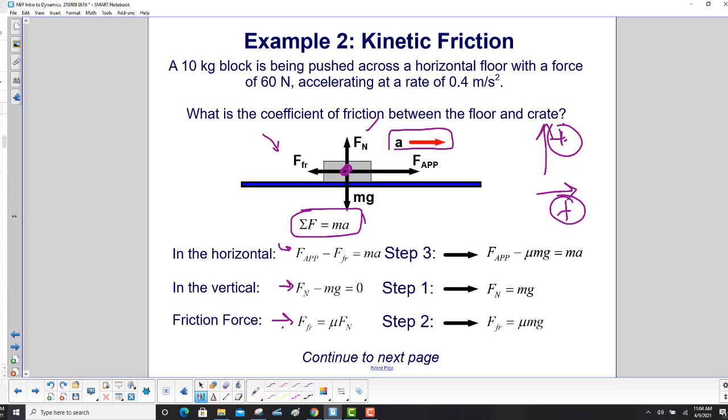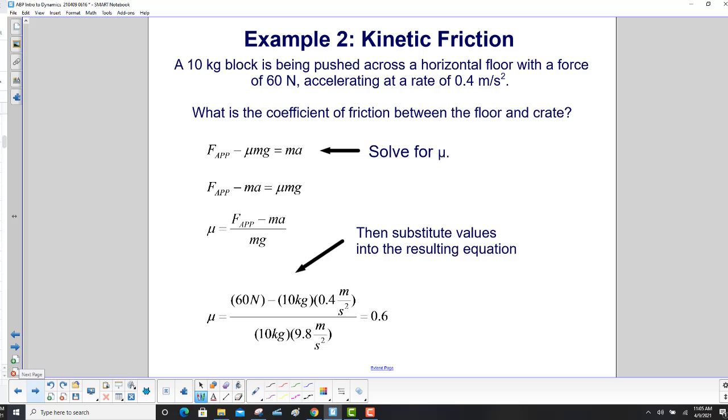So, step one, we identify what the normal force is. It's equal to mg as the box is not going up and down. Step two, we plug the normal force into the friction force equation, and we get the force of friction is mu mg. And then we come up to the top here. We just kind of reverse the order here. So, our applied force minus the friction force, which is mu mg equals ma.